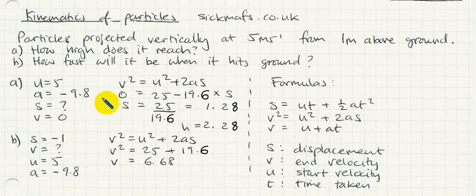We stick in our numbers. So v squared is going to be zero, since v is zero in the first place. u squared is going to be 25, since u is five. And 2as is going to be 2 times minus 9.8 times s, which is the same as minus 19.6s. And rearranging gives you s equals 25 over 19.6, which is 1.28.